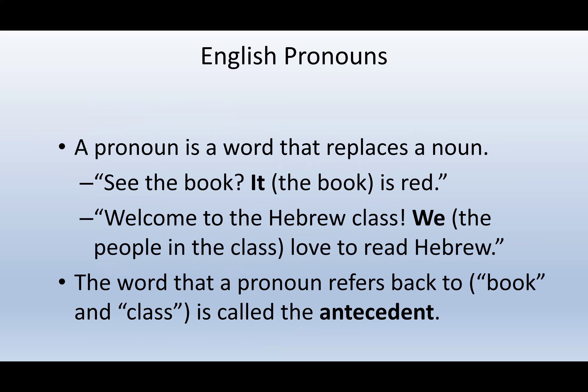We can say 'see the book' — no pronouns there. But if we further comment on it: 'it is read,' we are referring to the book. 'See the book? It is read' — 'it' refers to the book. 'Welcome to the Hebrew class, we' — the 'we' refers to the people in the Hebrew class. 'The people in the class love to read Hebrew. We love to read Hebrew.' The noun a pronoun refers back to is called the antecedent.